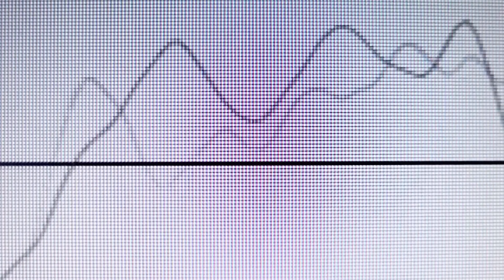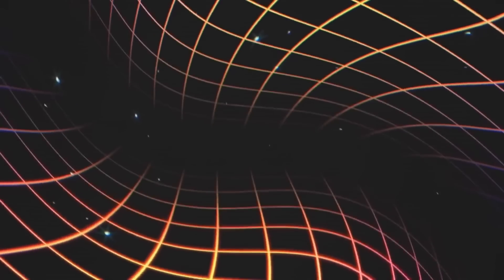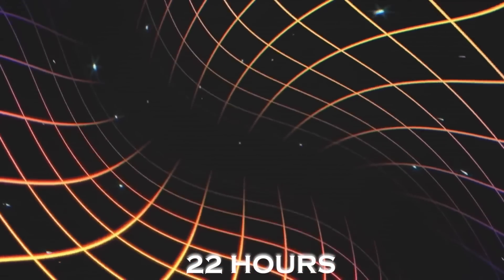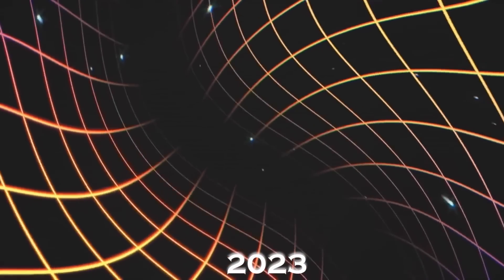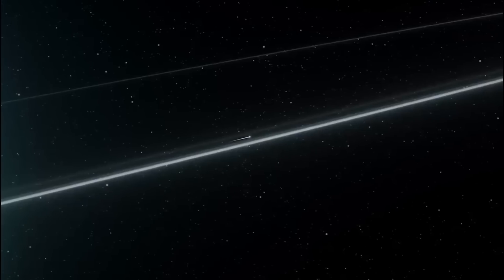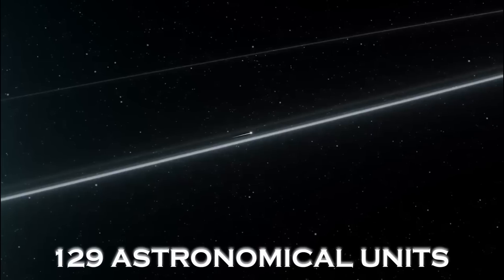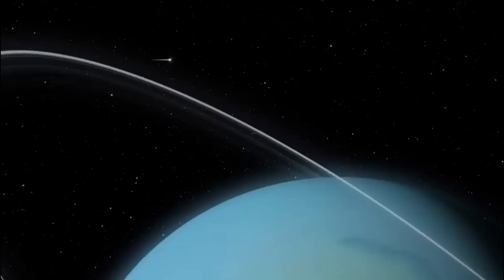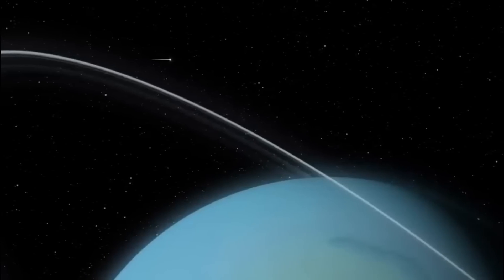Since the signals they send travel at the speed of light, it takes more than 22 hours to reach Earth. By the end of 2023, when Pioneer 10 finally stops operating, Voyager 2 will have traveled 129 astronomical units, marking the second-farthest spacecraft ever launched.